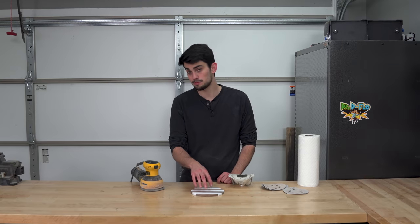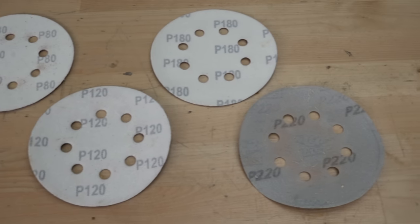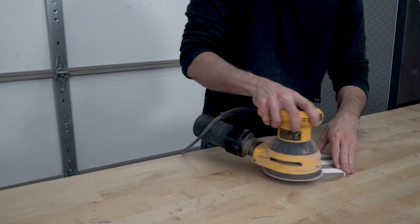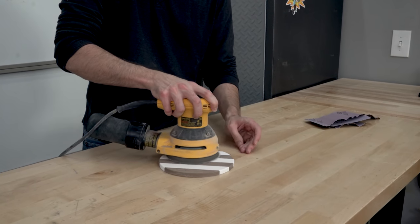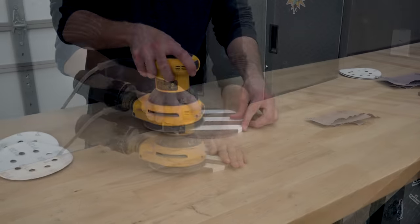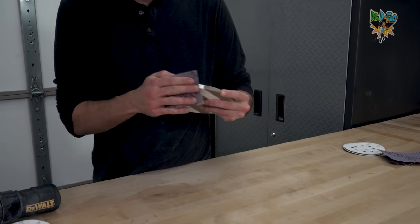We're going to sand this trivet up to 220 grit. That gives me that nice, smooth, stone-like texture on the corian. For the sides, we have to go the manual route.